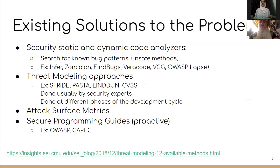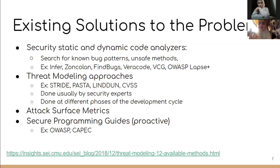This problem has been tackled before and there are four main existing approaches. First, static and dynamic code analyzers, which search for known bug patterns and unsafe methods in the code. Static analysis is done without code execution — just skimming the code — while dynamic analysis studies how the code behaves at runtime. The second approach is threat modeling, which gives priorities and enumerations of vulnerabilities and threats of the system.